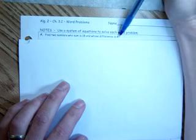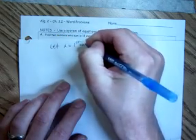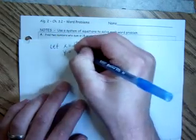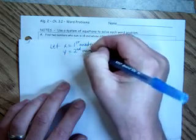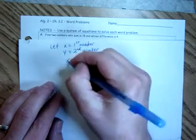Find two numbers whose sum is 18 and whose difference is 4. So what we're going to do is say let x equal the first number and y equal the second number.